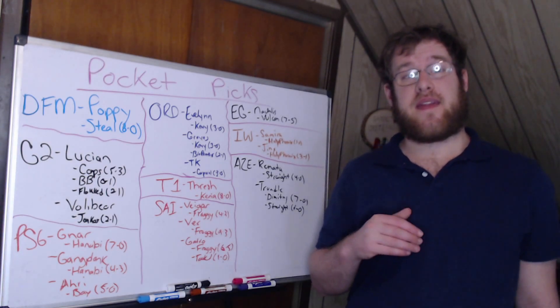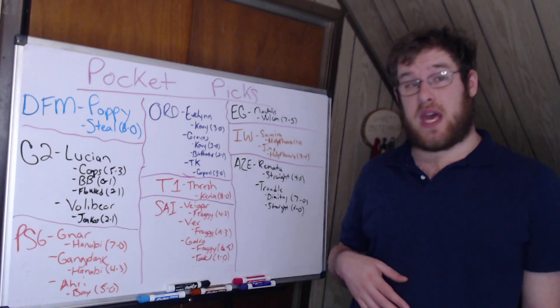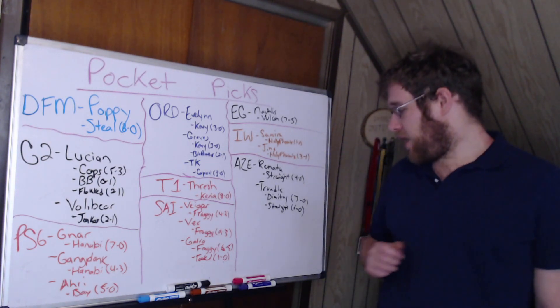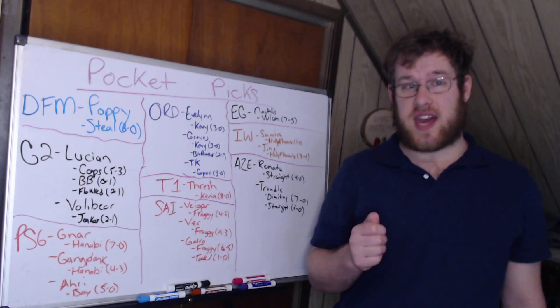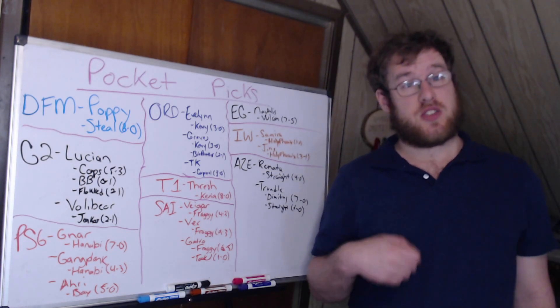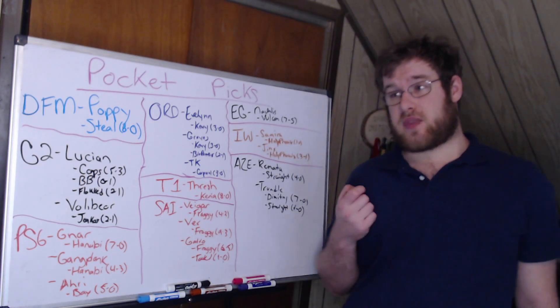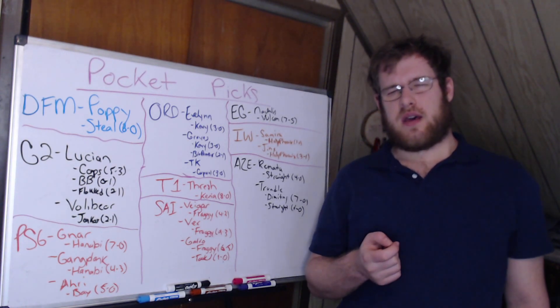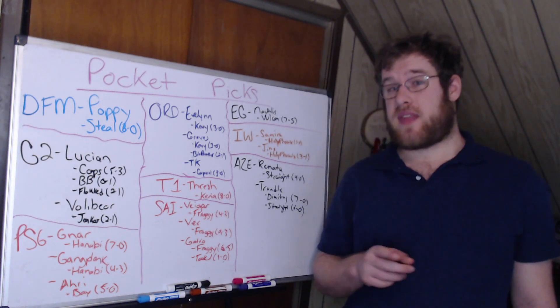But against Aze's team, they said we're getting the Renata off the board, and then they also got the Trundle off the board. And you're going to say Trundle, really? Dmitry was 7-0 on Trundle. Seven and oh. And they flexed it with Straight, and Straight got a win on it. So they were 8-0 on Trundle this past split, so teams were banning Trundle against Team Aze.